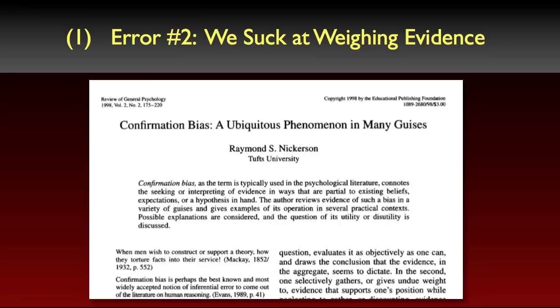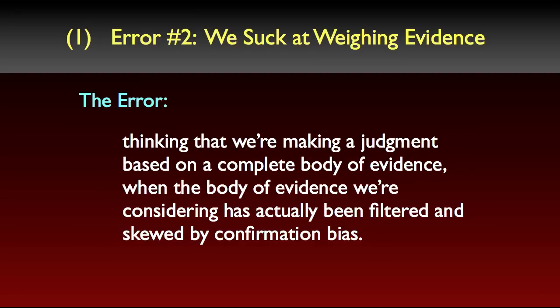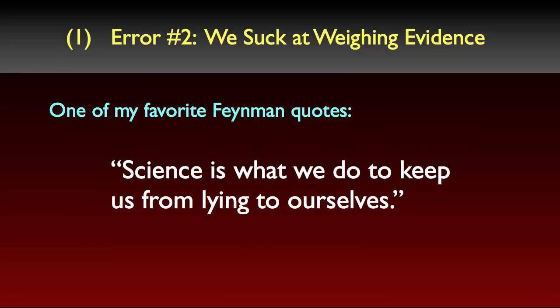These biasing effects are well-documented in the cognitive science literature — it's part of the cognitive biases literature that goes back several decades, and it's an ongoing area of research. I'll have some references in the show notes for those who want to follow this up. The upshot for our understanding of science is that, left to our own devices, human beings are prone to error in the weighing of evidence. The error is thinking that we're making a judgment based on a complete body of evidence, when the body of evidence we're considering has actually been filtered and skewed by confirmation bias. The physicist Richard Feynman once said that 'Science is what we do to keep us from lying to ourselves.' One of the functions of scientific methodology is to neutralize the effects of confirmation bias by forcing us to search for and weigh a complete body of evidence — one that includes not only confirming evidence, but also disconfirming evidence.